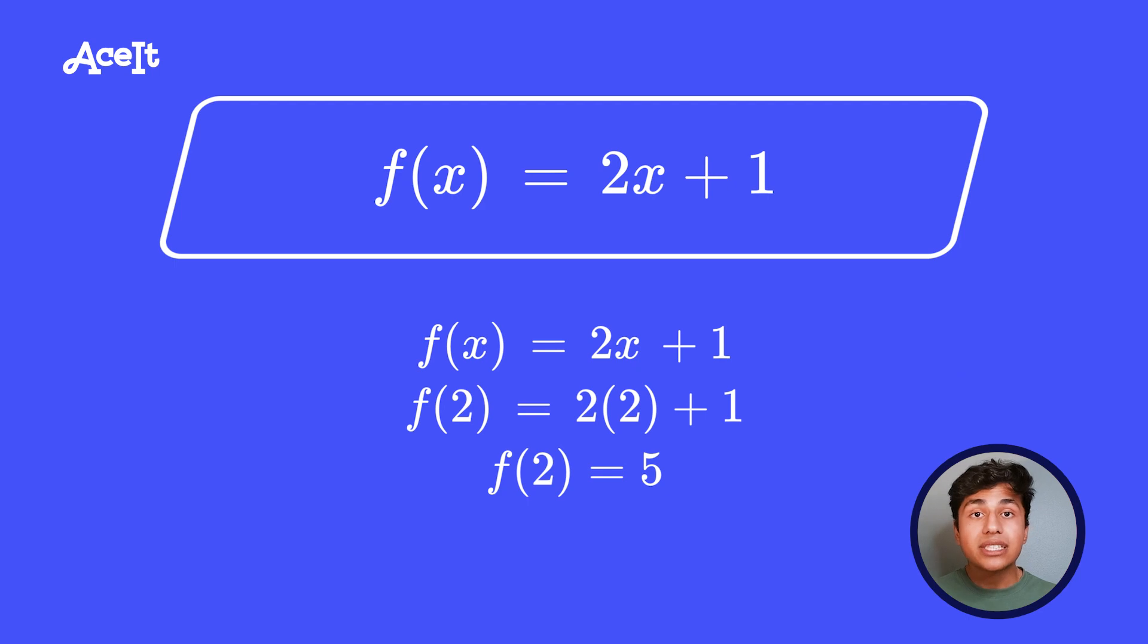So for example, if we take something like f of x equals 2x plus 1, and we're trying to find f of 2, we would substitute that 2 in and get 2 times 2 plus 1, or f of 2 is equal to 5.